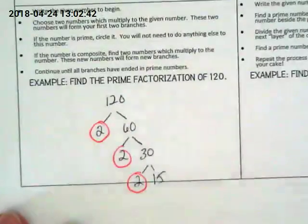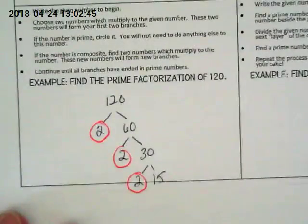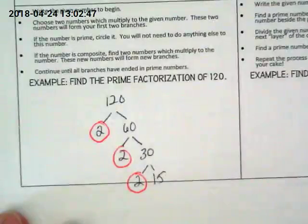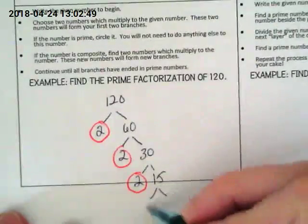Two is dead. The two branches are done because we're stopping their growth. But what about the fifteen? Three and five. And then we're done.